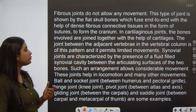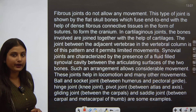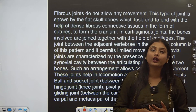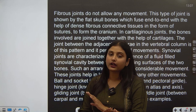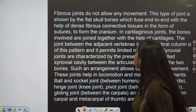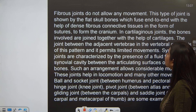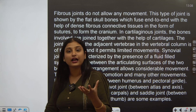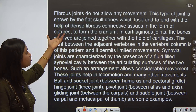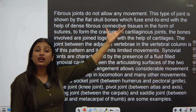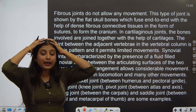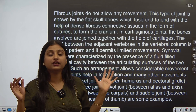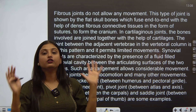That fibrous joints do not allow any movement. We have studied three types of joints in our NCERT. One of the joints is fibrous joints, which do not allow any kind of movement. This type of joint is shown by flat skull bones — that is frontal, parietal, temporal. These are all fibrous joints. They are not movable; they are completely rigid.